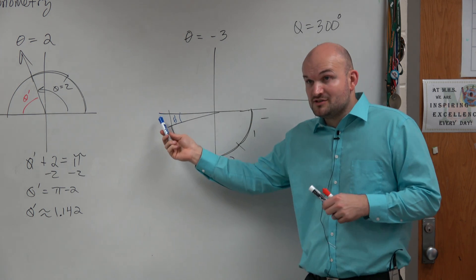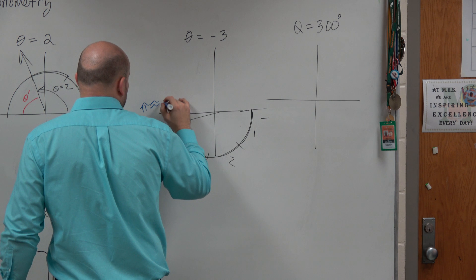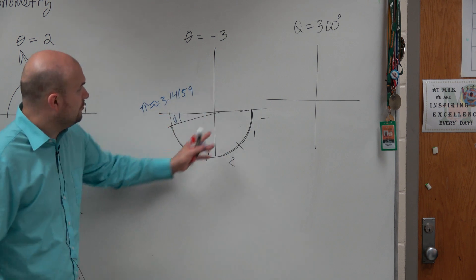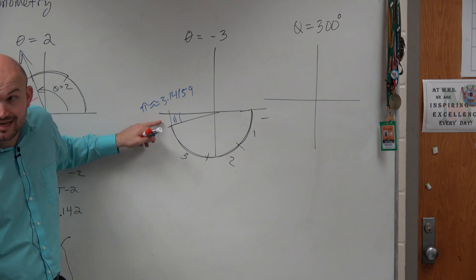Well, how far is it all the way around the circle? Pi, which is approximately 3.14159. Well, we already went to 3. So how far do we need to go just to get to that x-axis?